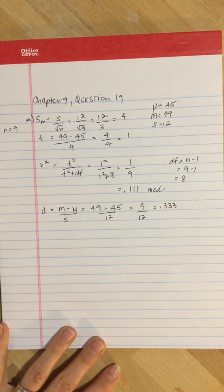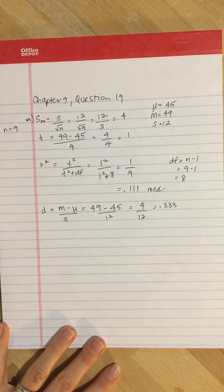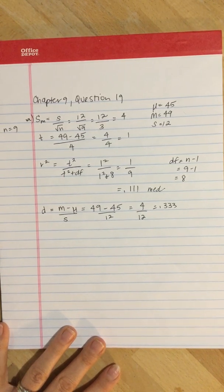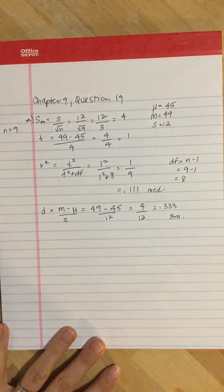Cohen's d is larger than 0.2 but smaller than 0.5, so this is a small effect size.